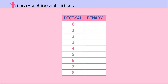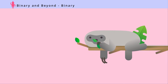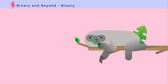In binary: 0, 1, 10, 11, 100, 101, 110, 111, 1000. Mr. Sloth can only count in binary using numbers zero and one, because that is all he can afford with his two toes while hanging on a tree.